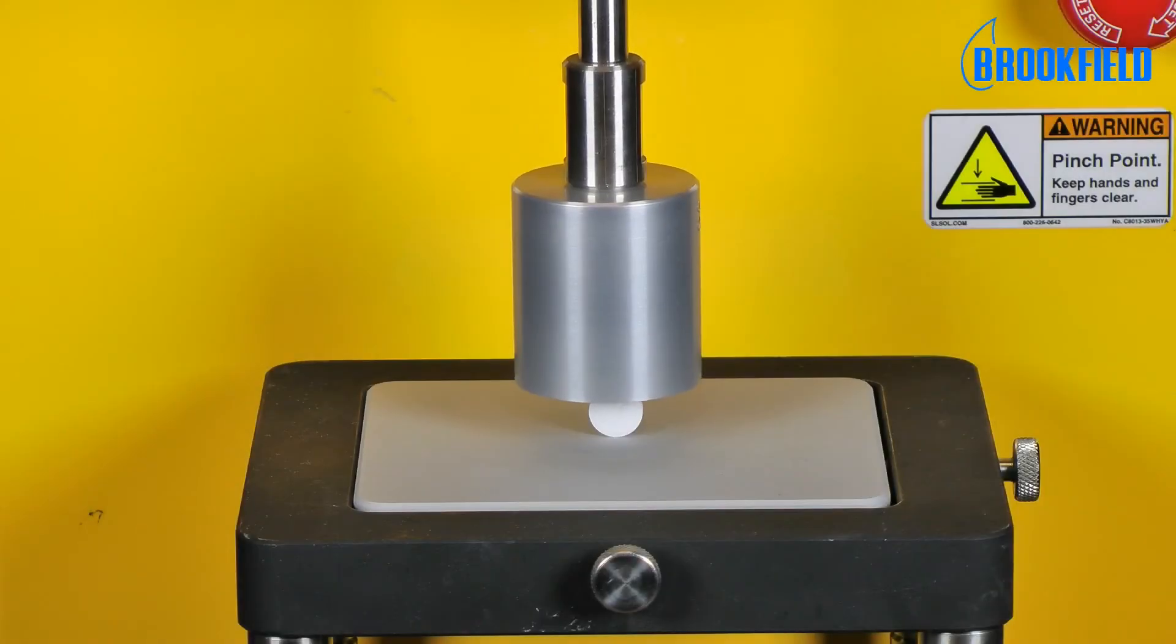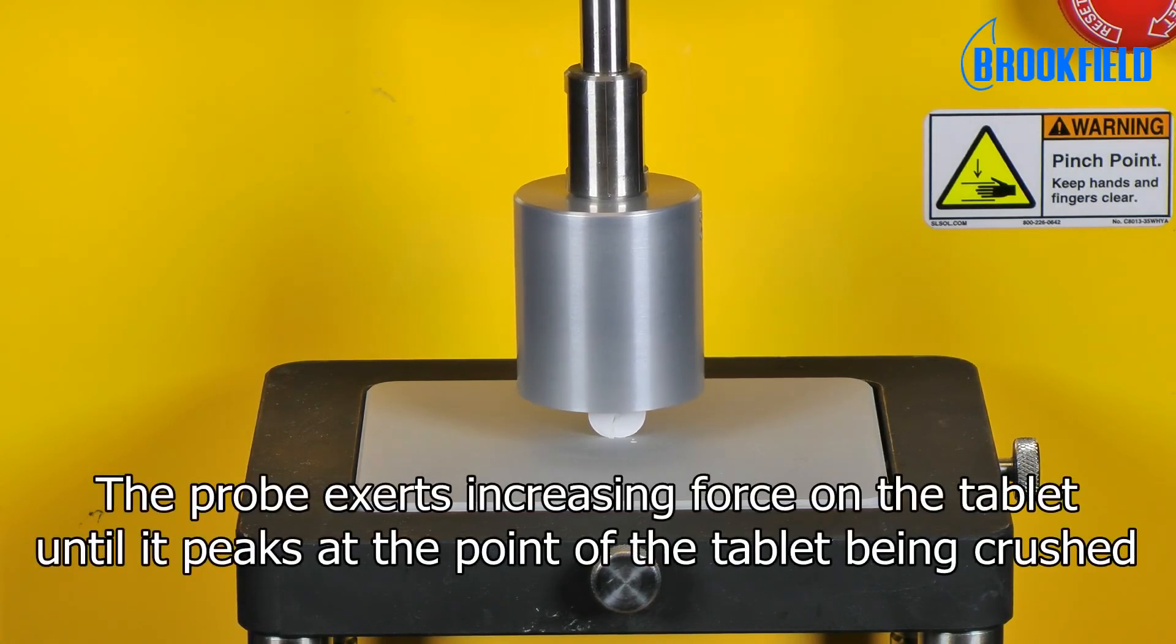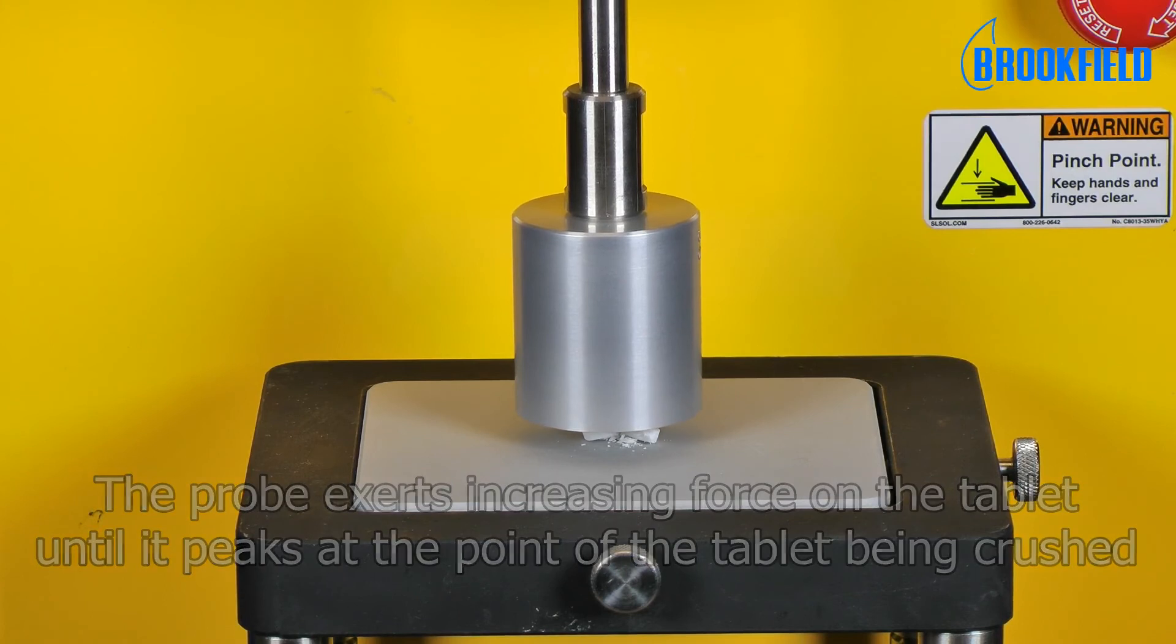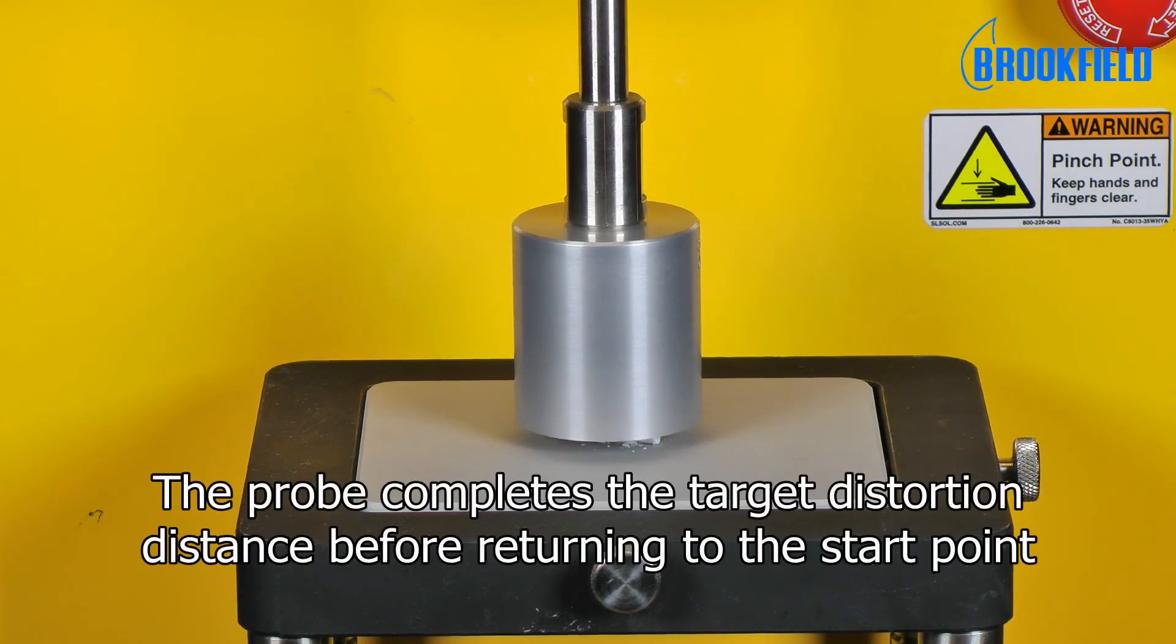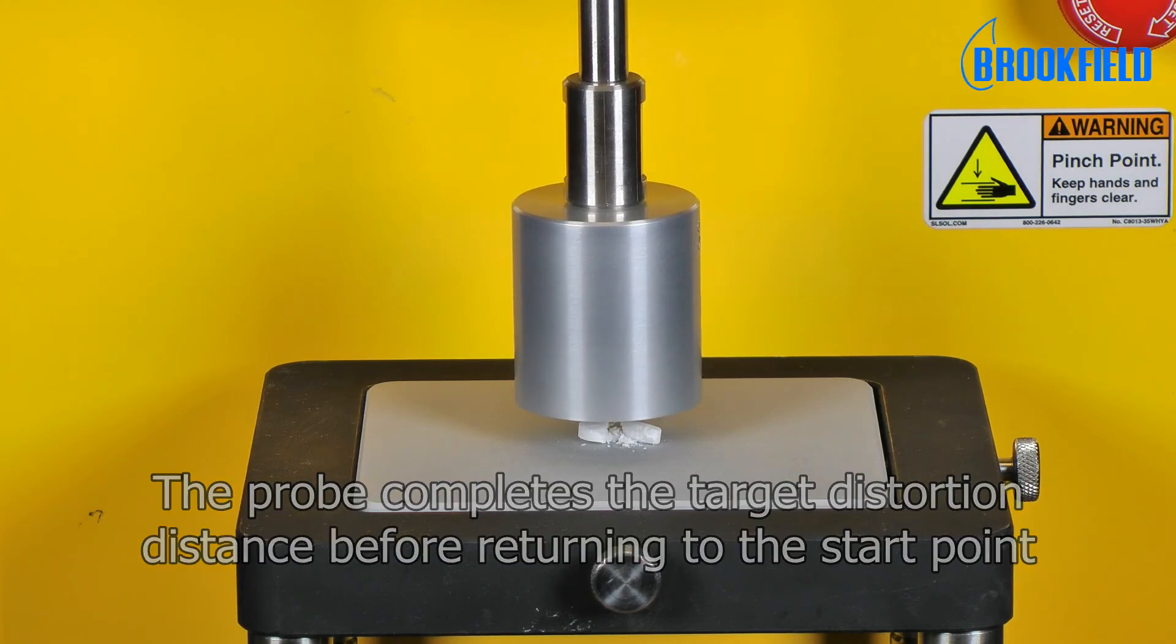At the tablet surface, the cylinder probe exerts an increasing force on the tablet to the point where the tablet begins to crush. The probe continues to crush the tablet covering the target distance before withdrawing from the tablet and returning to its starting position.